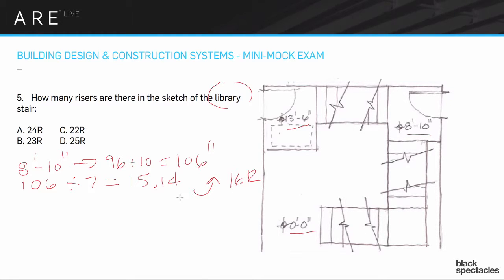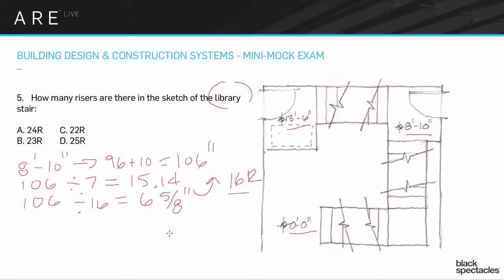That's a mistake people make all the time, because it seems like you should be able to go to 15 when you're so close. In this case, if we divide 106 by 16, it comes out to 6-5/8 inches. So we have 16 risers at 6-5/8 inches each for that first run. Now we have to think about the second run of stairs.